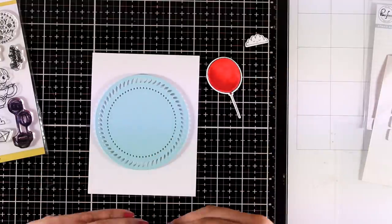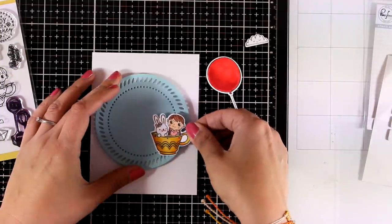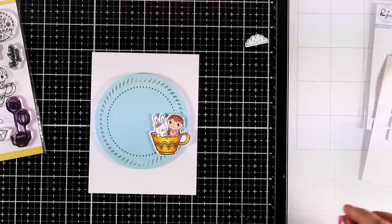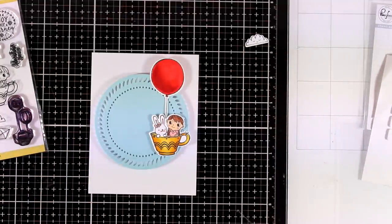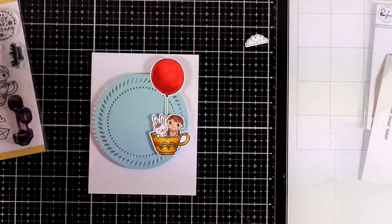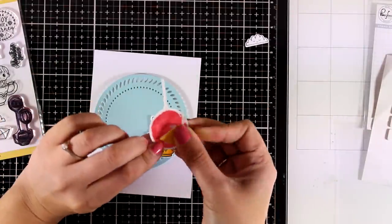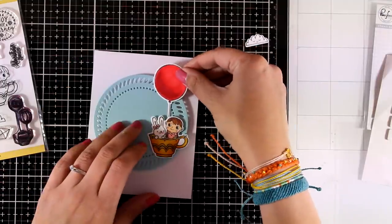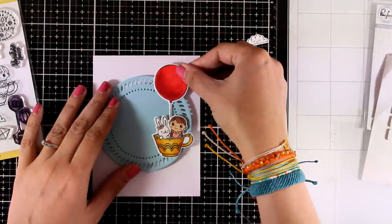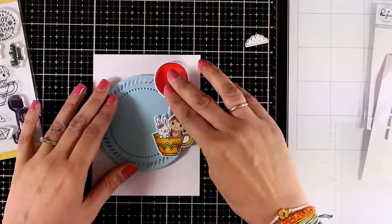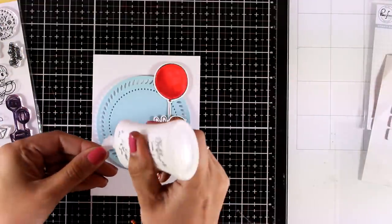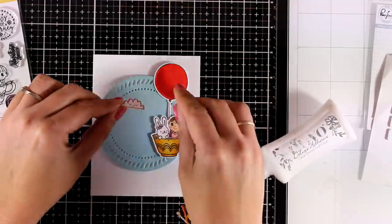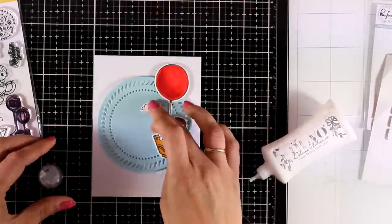As my focal points I went with stamps from the Enjoy the Journey stamp set - this is by Pinkfresh Studio from a previous release. I have stamped my images, colored them with my alcohol markers, and cut them out with the matching dies. Now I'm just putting everything together. I'm also going to add a little cloud down.